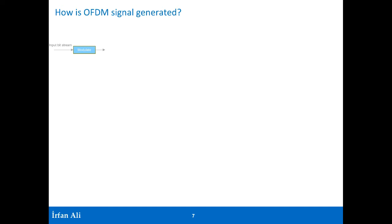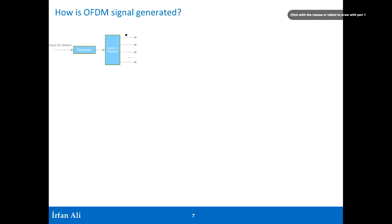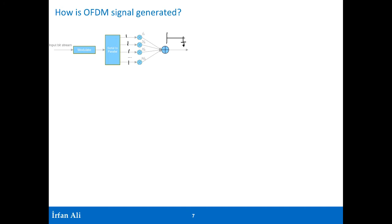You first modulate the signal and then do a serial-to-parallel conversion. For BPSK, you take your 12 bits and put one bit into each subcarrier, then multiply each by the subcarrier frequencies f0 up to N·f0. For one resource block there are 12 subcarriers, and you add up this bit pattern to produce your OFDM symbol over a time period T.